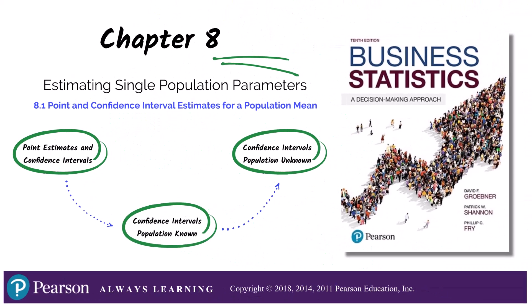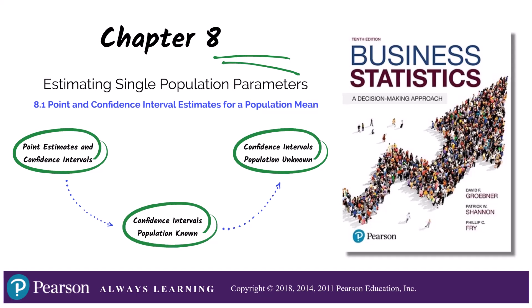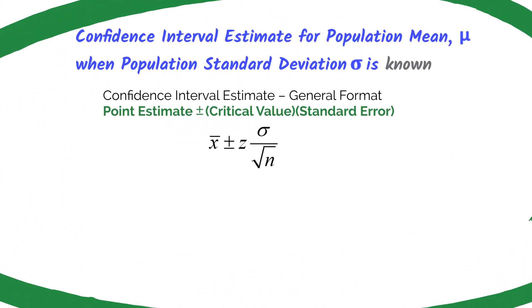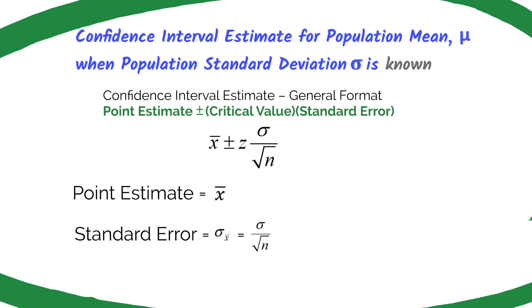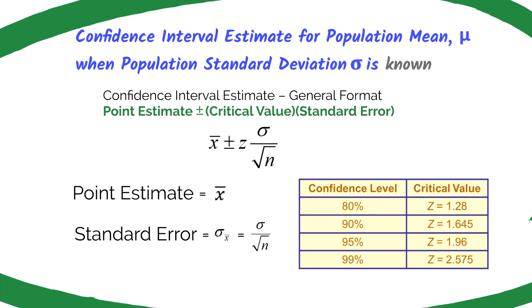Let's jump into calculating our confidence interval for when the population standard deviation is known. The format of the confidence interval estimate is: point estimate plus or minus the critical value times the standard error. The point estimate is the sample mean. The standard error, which we learned in chapter 7, is the population standard deviation divided by the square root of the sample size n. The critical value is the z-value we previously learned about.